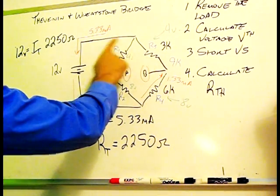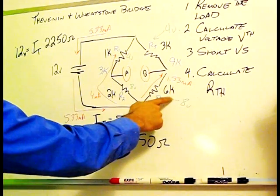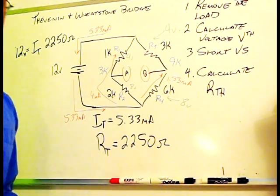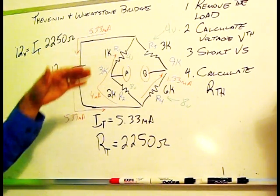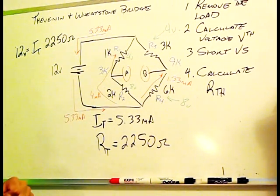This resistor is 3 times the size of this one, and this resistor is 3 times the size of this one. So that means that whatever the voltage divider ratio was that existed here, it's going to exist over here too.